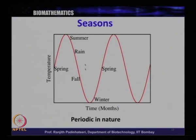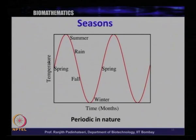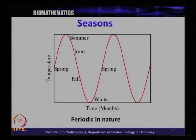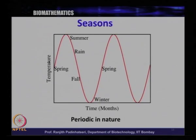As you can see in this graph, whenever you think of seasons, something of a periodic nature comes to mind. Summer every year in May is like the peak — it is very hot, very warm. It keeps repeating every year — periodic in nature. Similarly, rain at some particular time every year: the monsoon arrives in India and it rains. In January every year it is winter.